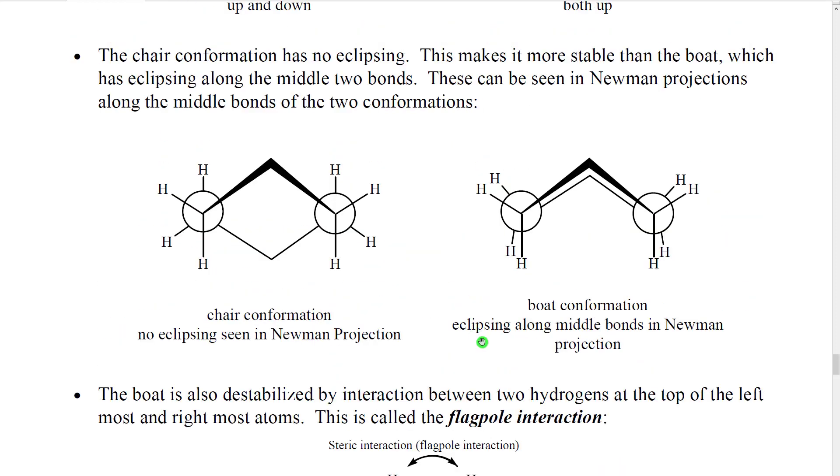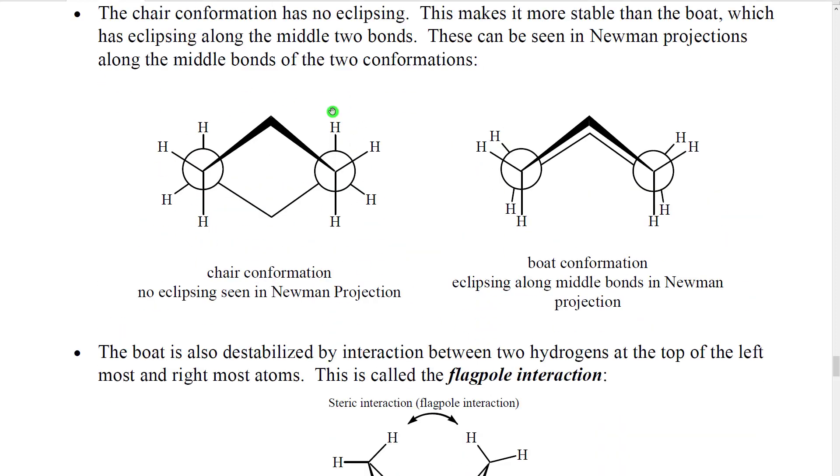The net effect of this is that the chair is the most stable cyclohexane conformation, and the boat has a somewhat higher potential energy, but they're both better than being flat.